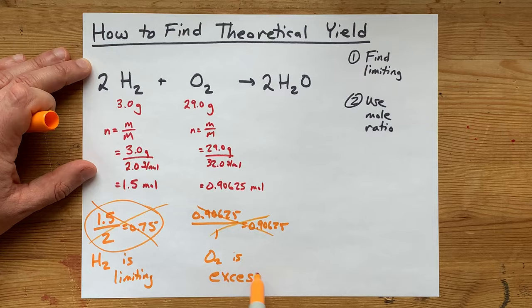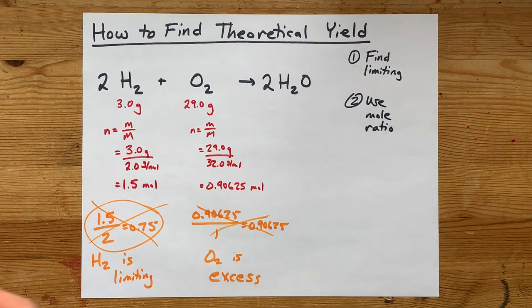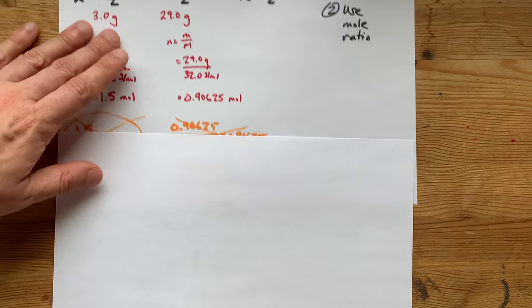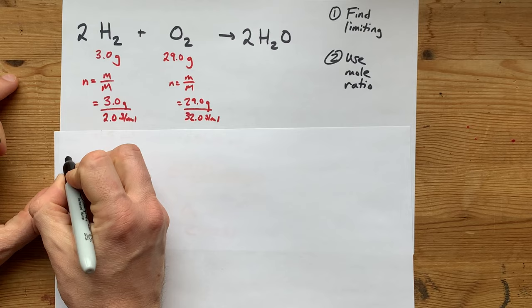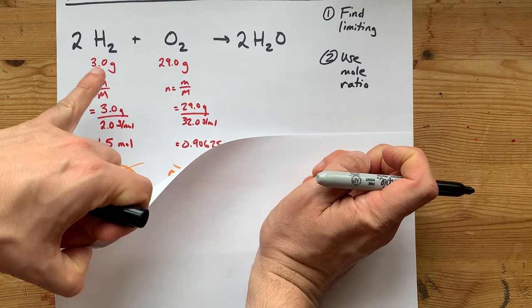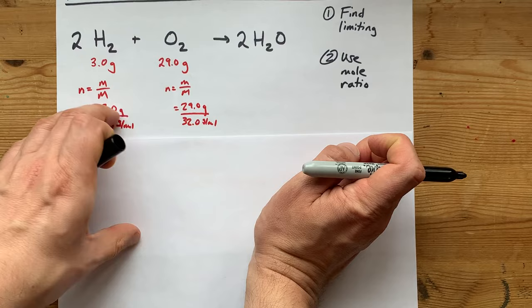Now, to be honest, I discard these calculations once I've figured that out. All I needed to know is which one is limiting. Now we're going to use a mole ratio to figure out how much water is made. But the trick is that you have to base that amount off of the limiting reactant, because it's the H2 that's controlling how much water we can even make. It's the limiting factor. Get it?